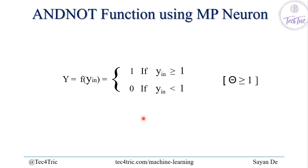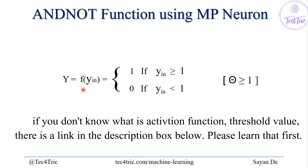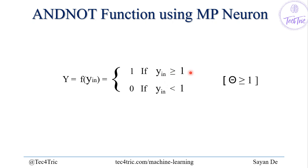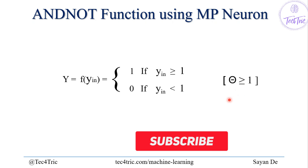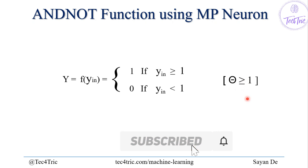The final output y will be from the activation function of y_input: it equals 1 if y_input is greater than or equal to 1, and 0 if y_input is less than 1, where the threshold value theta is greater than or equal to 1.